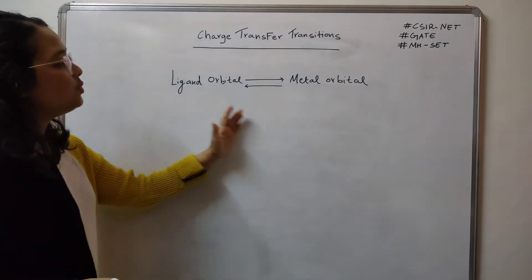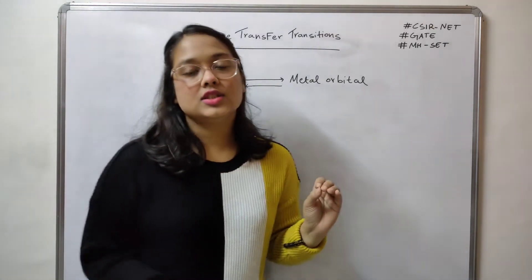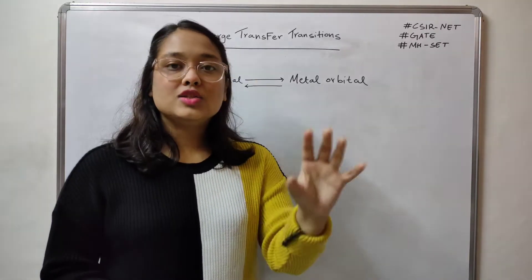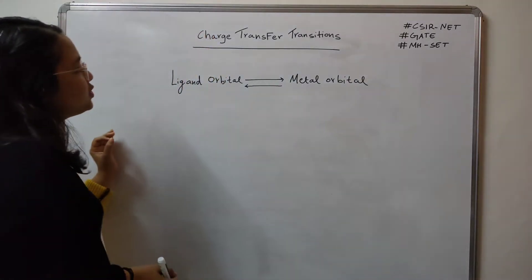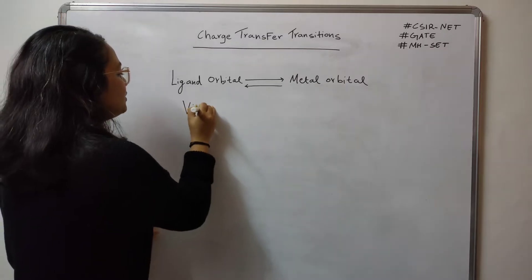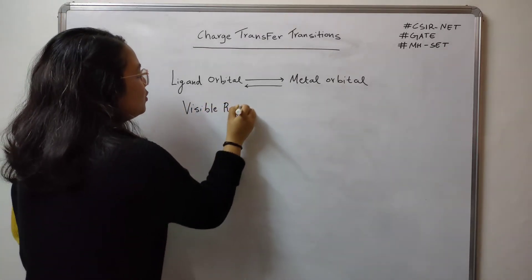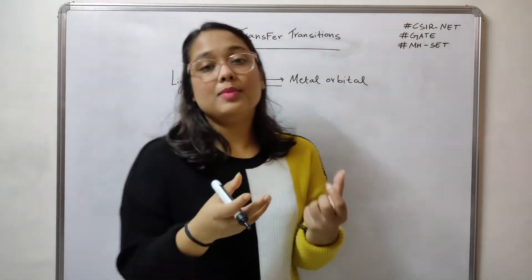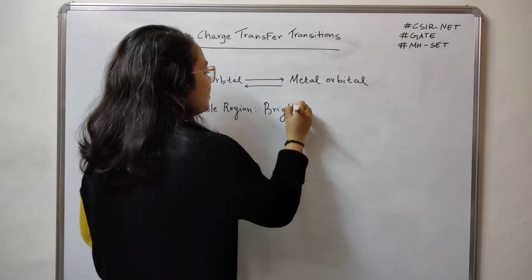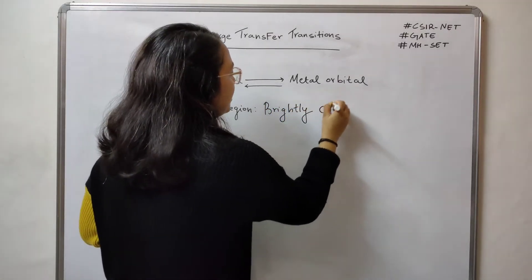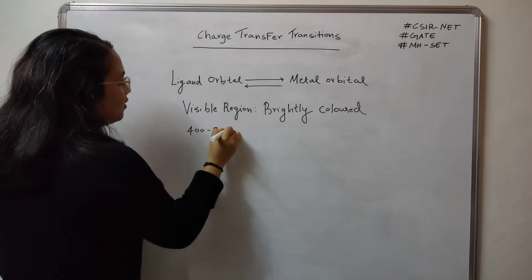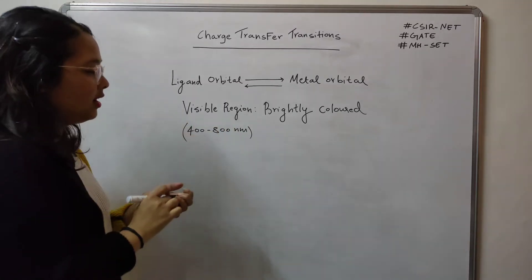The energy which is associated with these transitions — where electrons are being moved from one level to another — when it falls in the visible region, the compounds which show these charge transfer transitions will be brightly colored. Our visible region is usually from 400 to 800 nanometers.